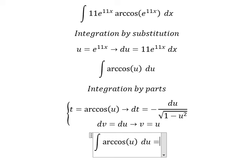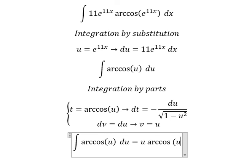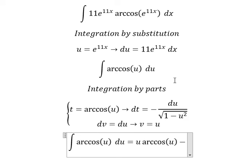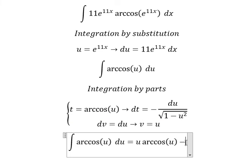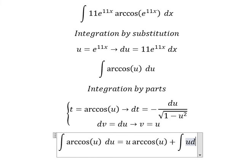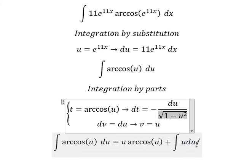So we have t multiplied by v, minus dt multiplied by v. We have a negative side here, so you get a positive, and we have the integral of u du over the square root of 1 minus u squared.